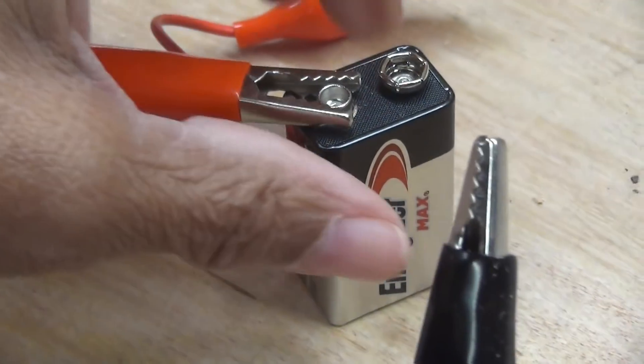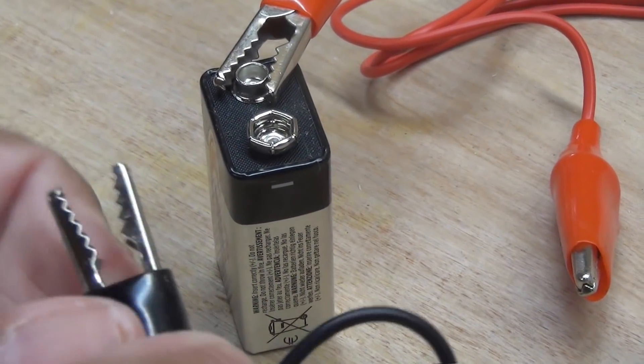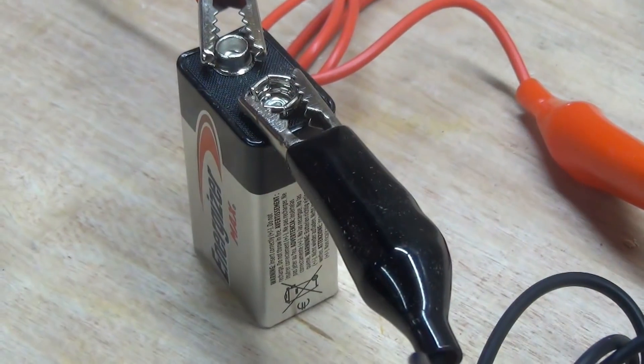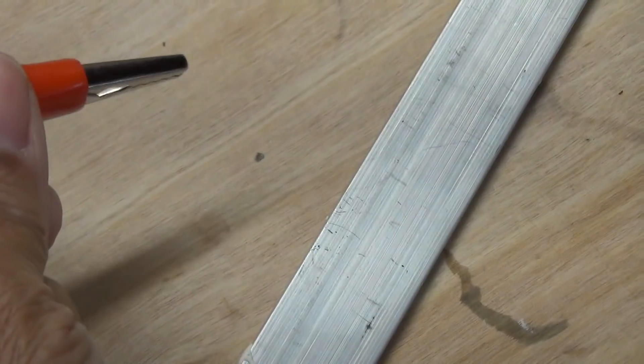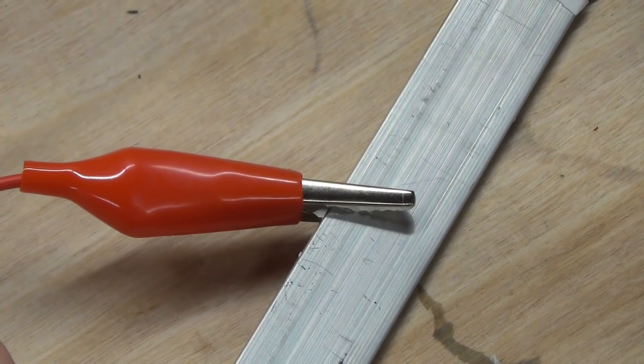Now I'm going to take my negative here, which is denoted by a minus, and I'm going to hook up my black, like that. There we go. Now take your positive alligator clip, and just clip that right to the workpiece, just like that.